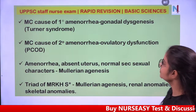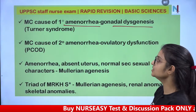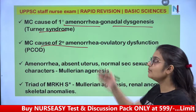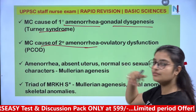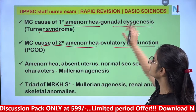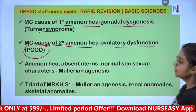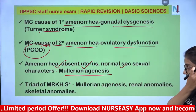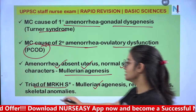The most common cause of primary amenorrhea is gonadal dysgenesis, as seen in Turner syndrome. The most common cause of secondary amenorrhea is ovulatory dysfunction, such as PCOD. In Mullerian agenesis, there is amenorrhea, absent uterus, but normal secondary sexual characteristics. Triad of MRKH syndrome: Mullerian agenesis, renal anomalies, and skeletal anomalies.